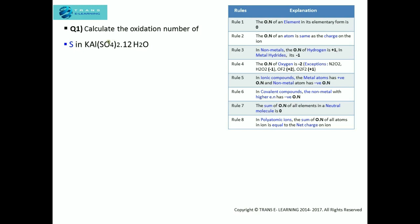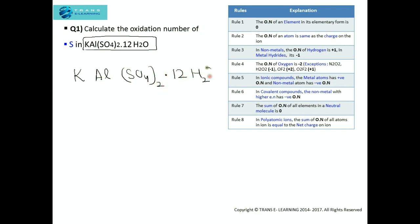The first question: calculate the oxidation number of sulfur in potassium alum. The first step is to write the oxidation number of each and every element. Potassium alum is KAl(SO4)2·12H2O. The oxidation number of potassium is plus 1 because it is a group 1 element — an alkali metal. The oxidation number of aluminum is plus 3 because it belongs to group 13 of the periodic table. The oxidation number of sulfur we take as x, since that is what we need to find.